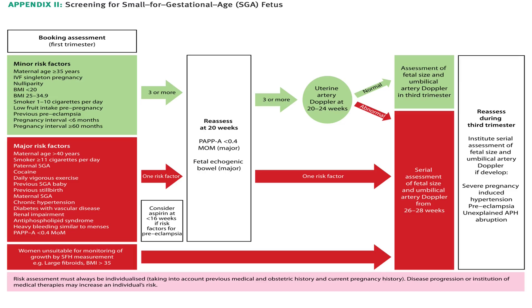Here is Appendix 2, which covers screening for SGA fetuses. This part is very important. We always do the risk assessment at booking of each patient in the first trimester. There are minor and major risk factors. Minor risk factors include: maternal age ≥35, IVF singleton pregnancy, nulliparity, BMI less than 20, BMI 25–34.9, smoking 1–10 cigarettes per day, low fruit intake pre-pregnancy, previous pre-eclampsia, pregnancy interval less than 6 months, and pregnancy interval ≥60 months.